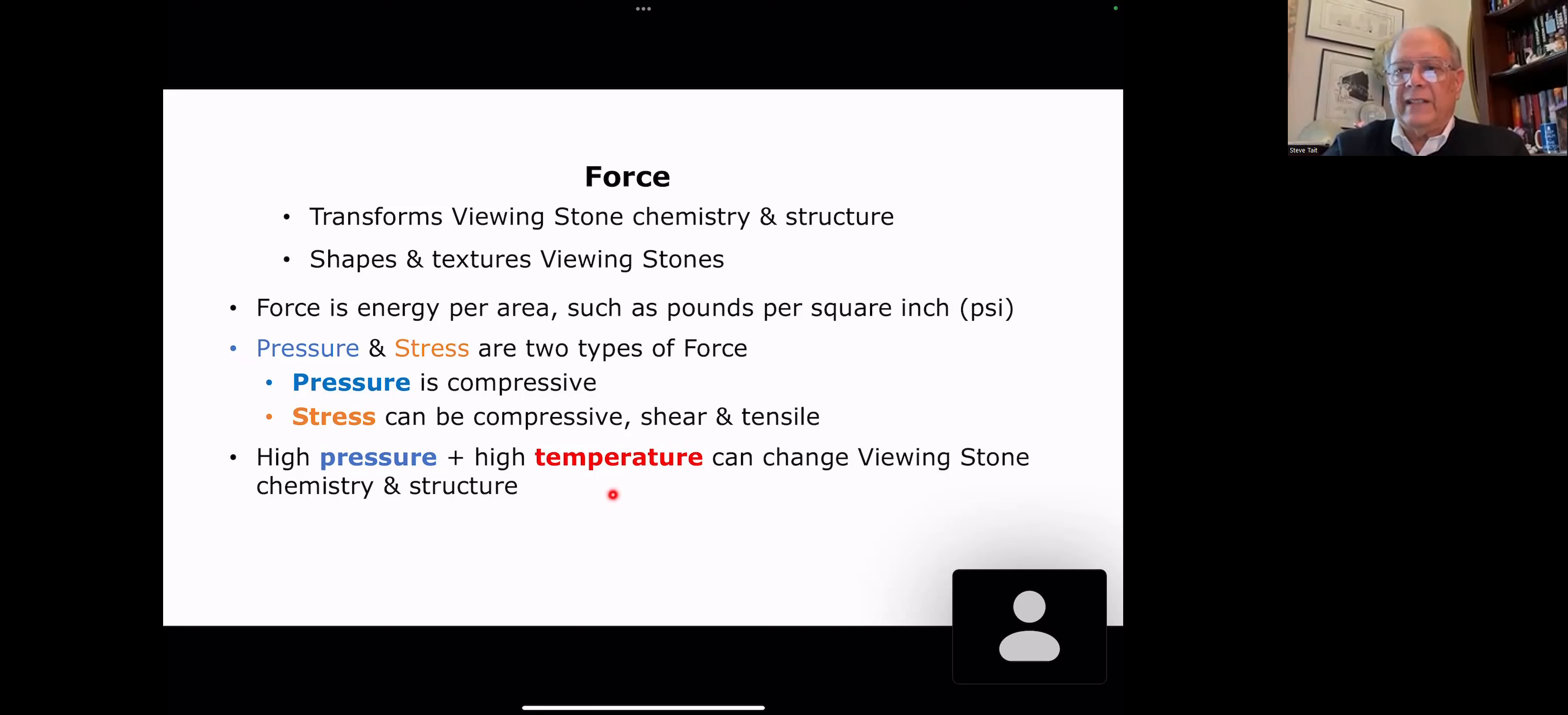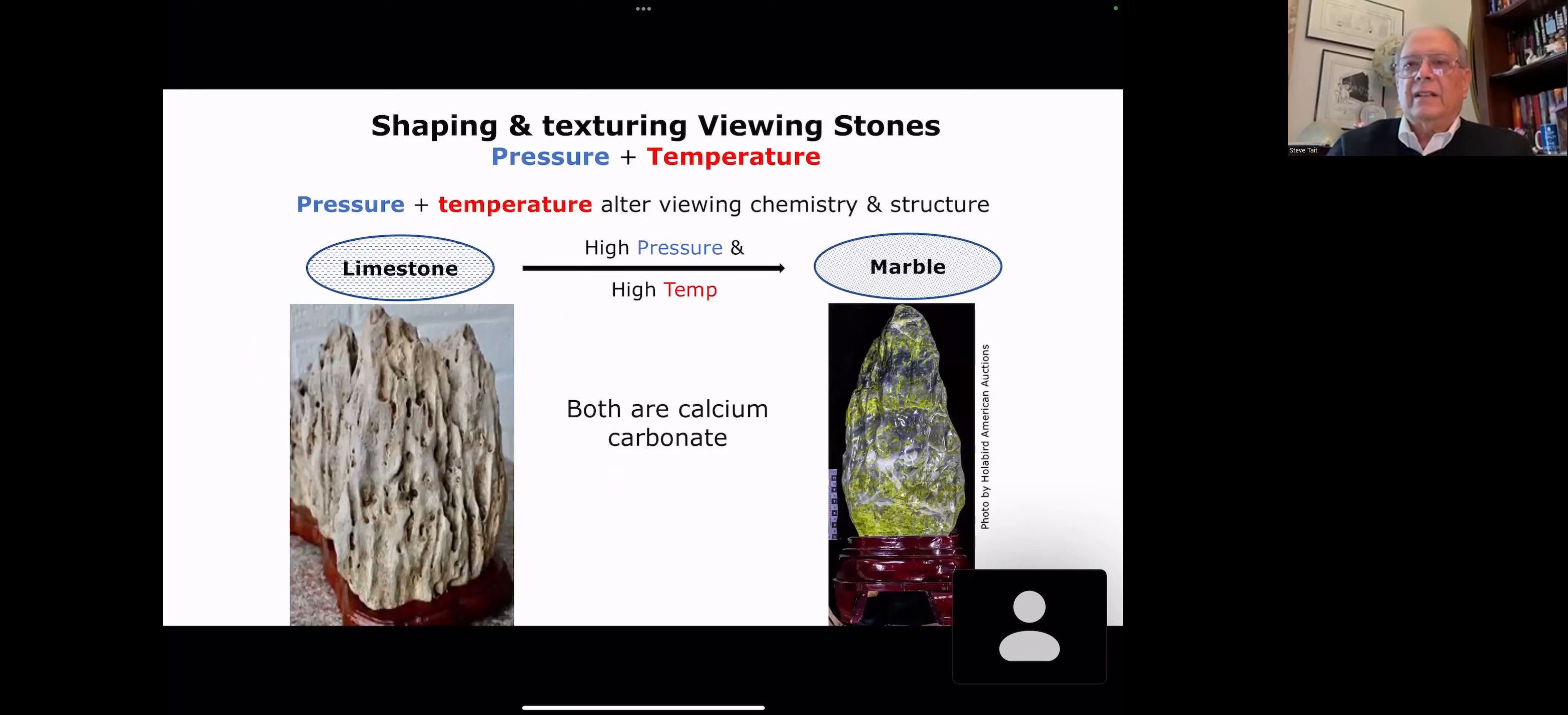Pressure at high temperature can also change viewing stone chemistry and structure. Probably the most well-known example of that is limestone, where it's a layered structure. You add the high pressure and high temperature to that, and you get a crystalline structure now, which is marble. Both are calcium carbonate, but one's layered and the other's crystalline.